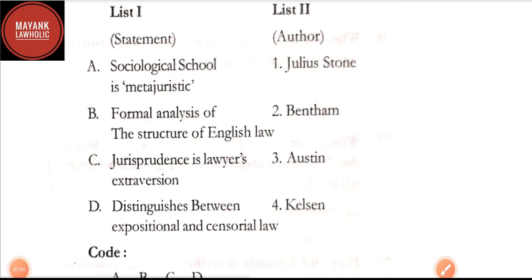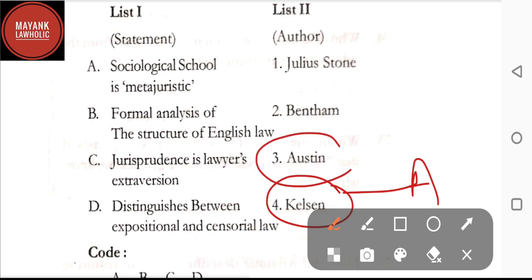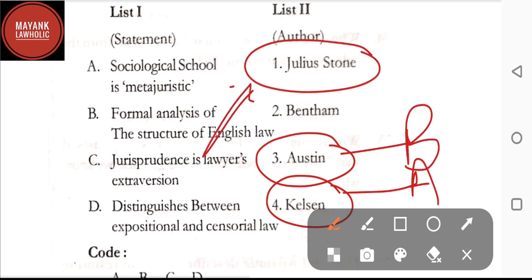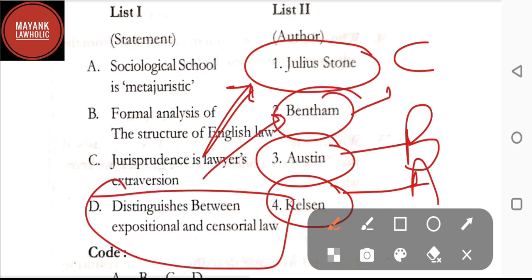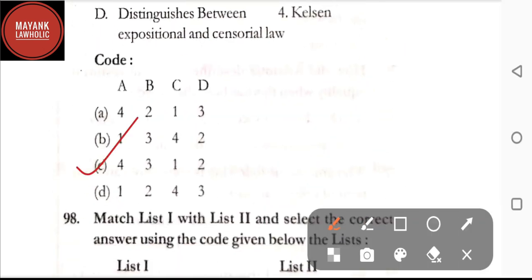Question number 97: match the following statements and authors — sociological school is meta-juristic, said by Kelsen; formal analysis of the structure of English law, said by Austin; jurisprudence is lawyer's extraversion, said by Julius Stone; distinguishes between expositorial and censorial law, said by Bentham. By going through these matches, the correct code is option C.